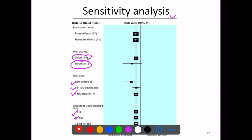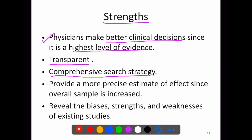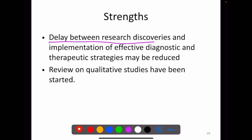The strengths of meta-analysis: physicians make better clinical decisions since it is the highest level of evidence. It is more transparent compared to other studies because the quality of all included RCTs will be available in the literature. A comprehensive search strategy will be followed. It provides a more precise estimate of effect since the overall sample is increased. It can reveal the bias, strengths and weaknesses of existing studies, and the future direction of research can be identified. The delay between research discoveries and implementation of effective diagnostic and therapeutic strategies may also be reduced.